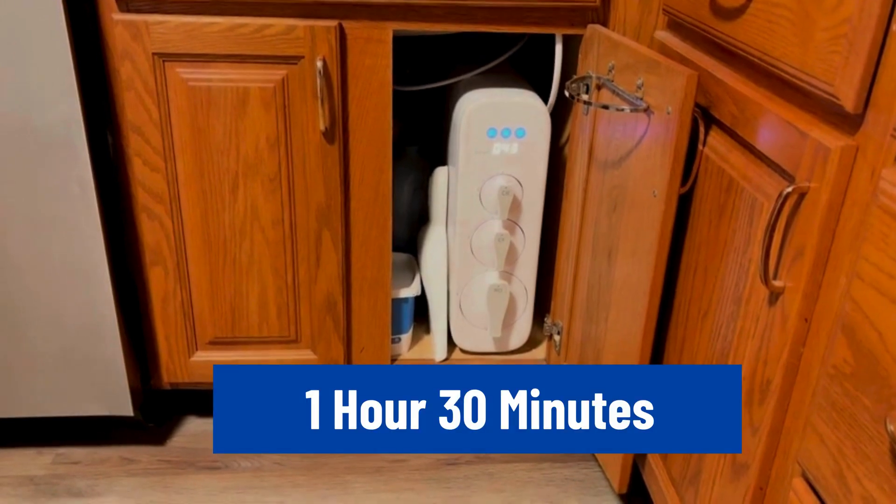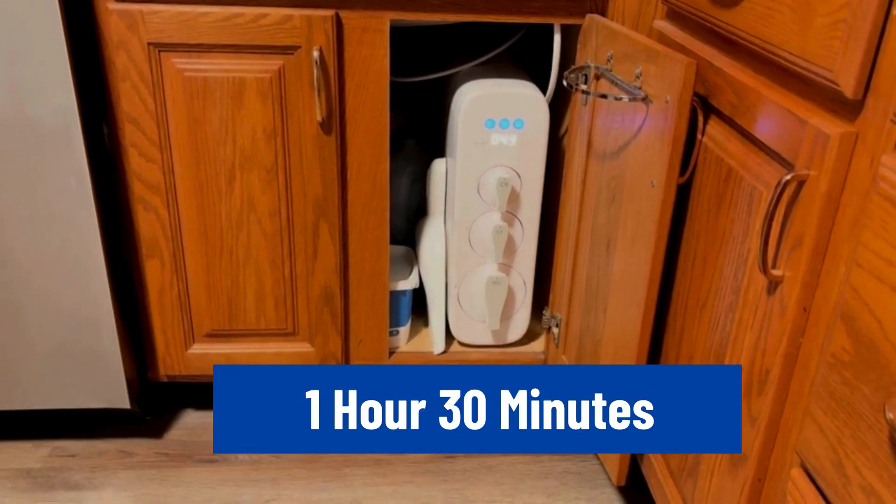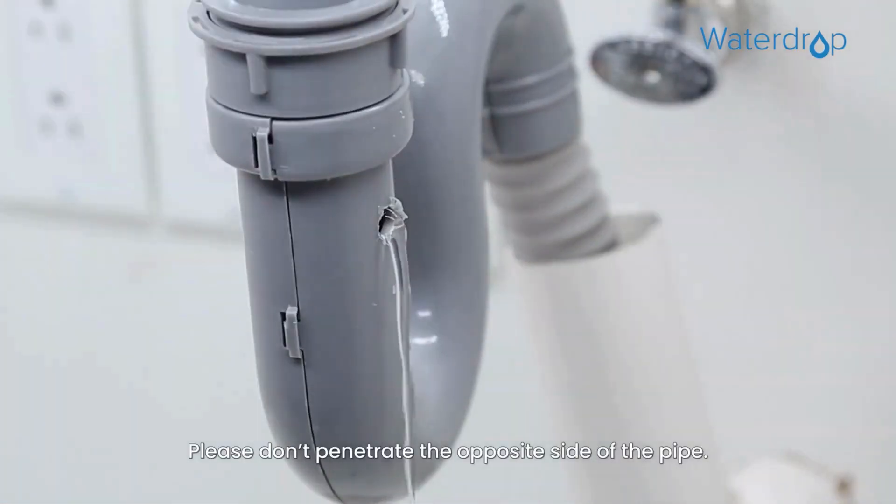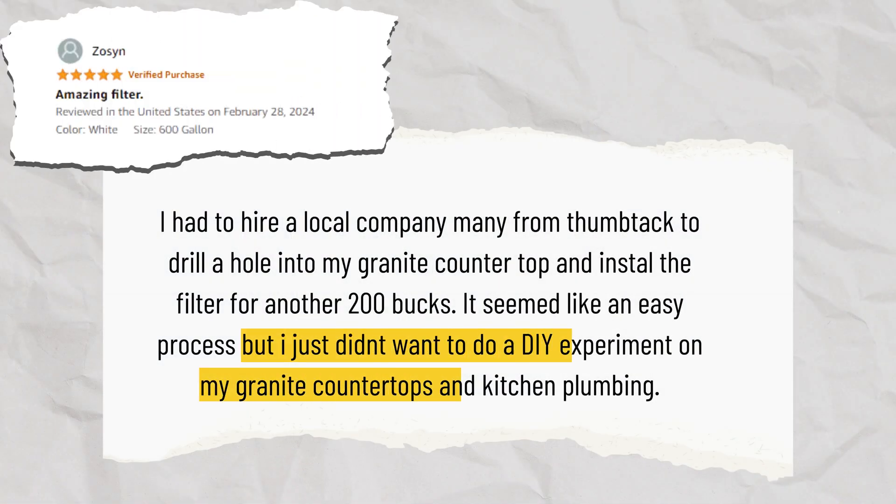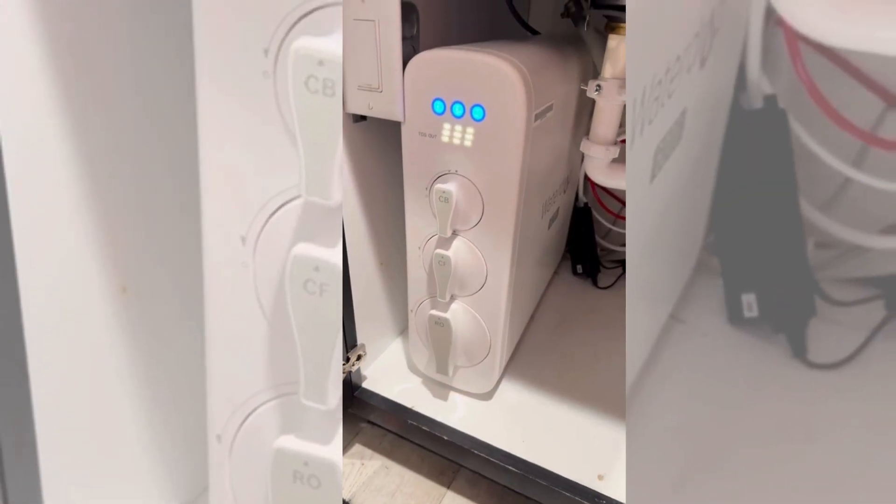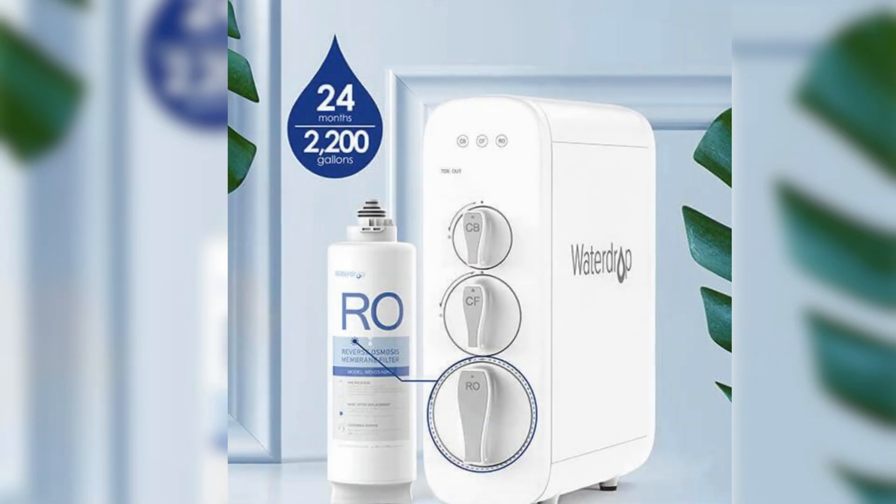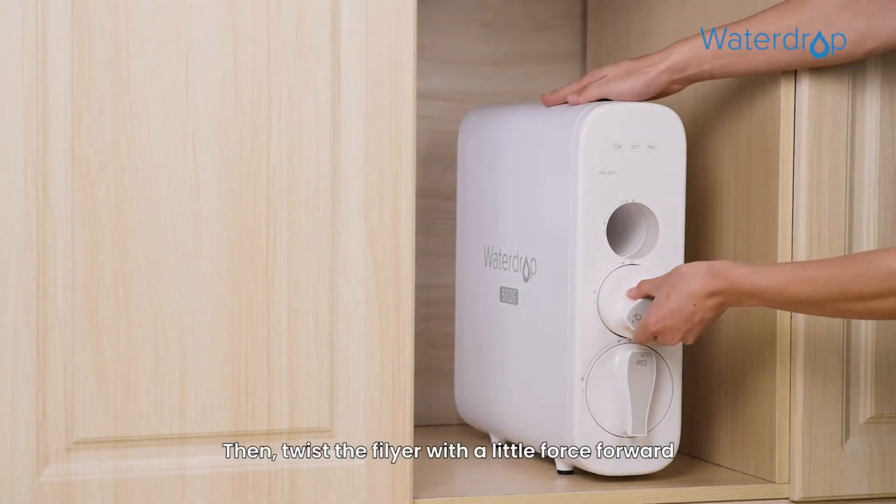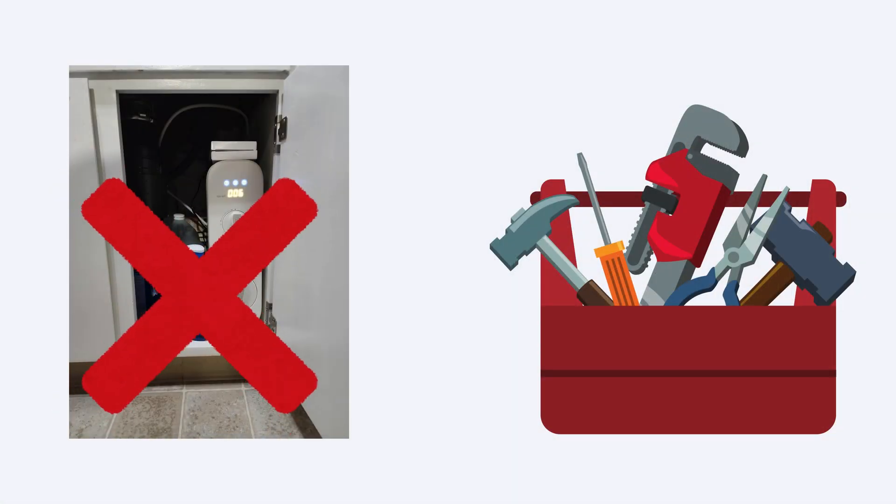Installing the Waterdrop G3 system takes around 1 hour and 30 minutes, and connecting the pipes and drilling a hole for the RO wastewater line requires some hands-on DIY work. However, once the system is installed, maintenance becomes easy. The filters have a lifespan of up to 2 years, and the filter can be changed in just 2 seconds. There's no need to move the system, nor is there a need for tools.